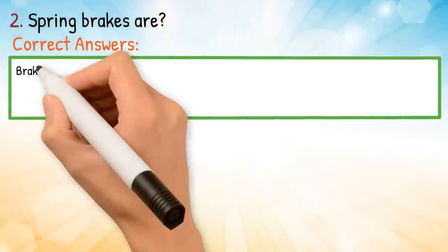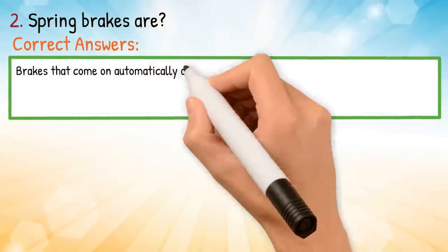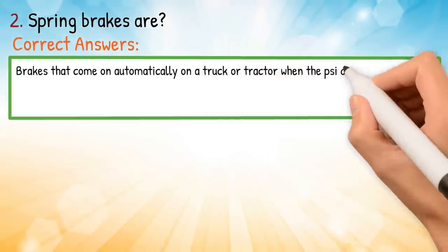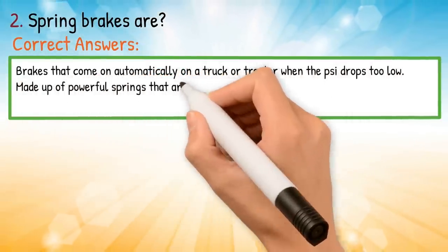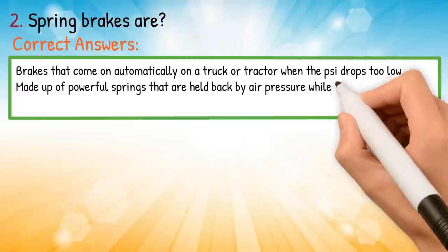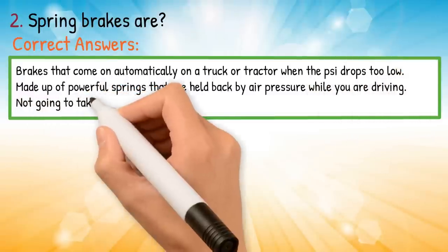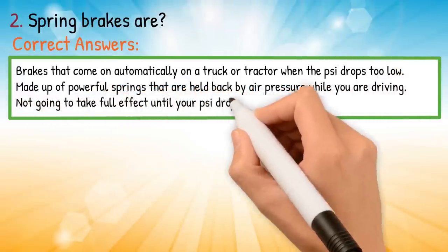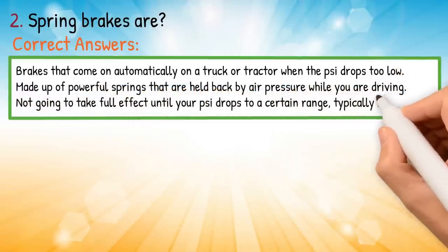Correct answer: brakes that come on automatically on a truck or tractor when the PSI drops too low. They are made up of powerful springs that are held back by air pressure while you're driving. They won't take full effect until your PSI drops to a certain range, typically 20 to 30 PSI.